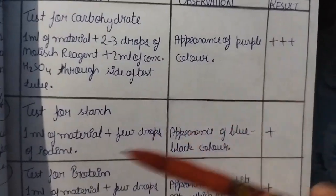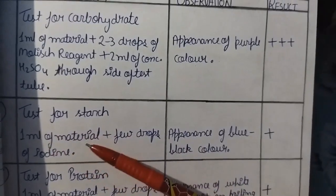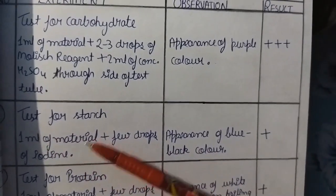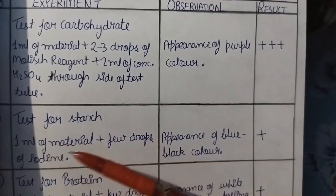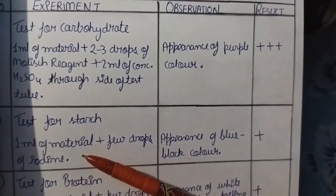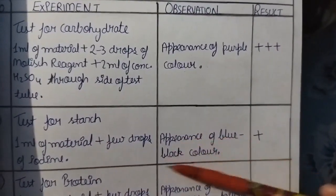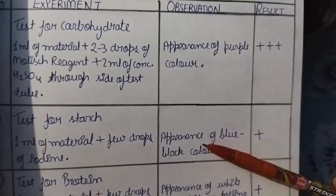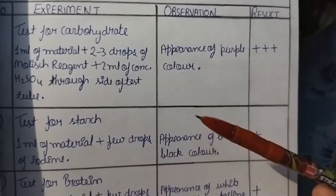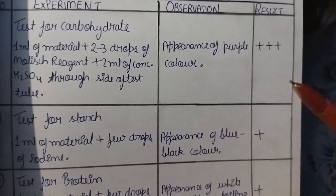For the test of starch, we take 1 ml of the material and then add a few drops of iodine to it. This will result in the formation of a blue-black color, which means that starch is also present in the wheat grain.